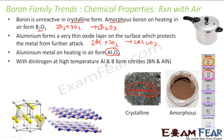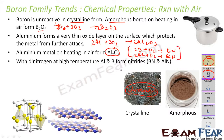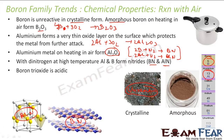With dinitrogen at high temperature, aluminium and boron react to form nitrides. Boron plus nitrogen gives BN (boron nitride), and aluminium plus nitrogen gives Al2N (aluminium nitride). Please note that boron trioxide, B2O3, is acidic in nature. This is the shape of boron nitride and this is the shape of aluminium nitride.